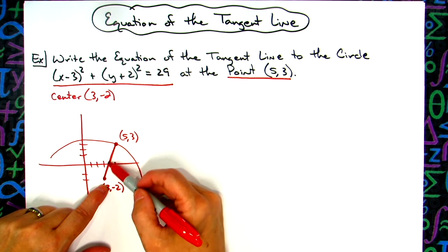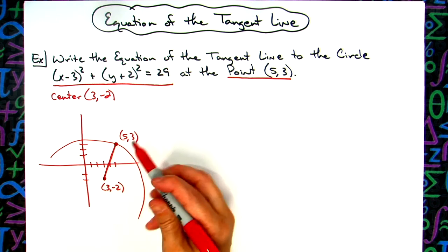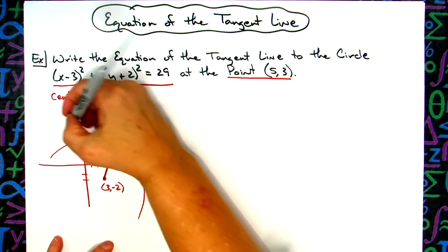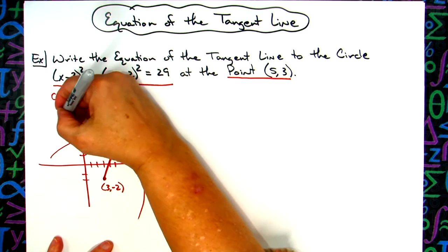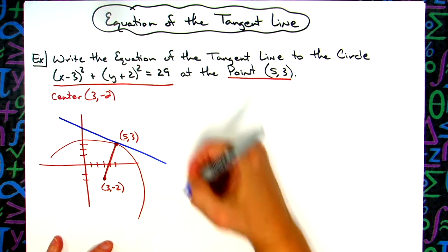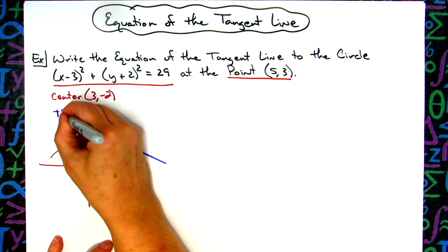And then this would be the radius going out. I'm wanting the equation of the tangent line. The tangent line to that point would be that line right there. That right there would be my tangent line.